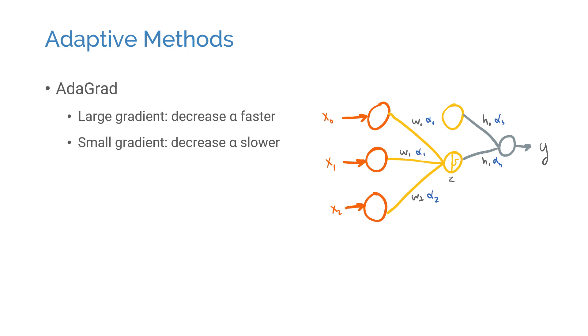Adagrad algorithm decreases the learning rate faster for the parameters that have a large gradient components and slower for the ones that have smaller gradient. RMSprop algorithm also adaptively tunes the learning rate for each parameter in a similar way, but uses a moving average of the gradients to make the optimization more suitable for optimizing non-convex cost functions.